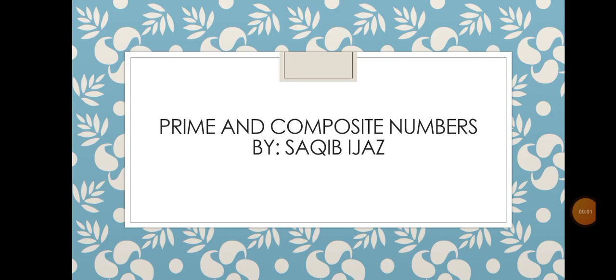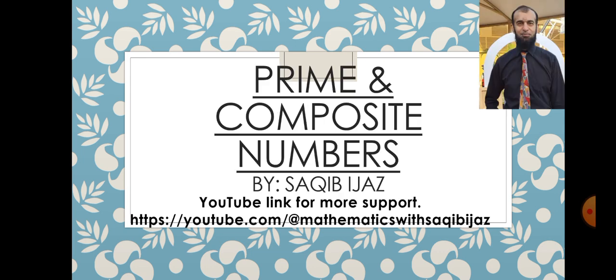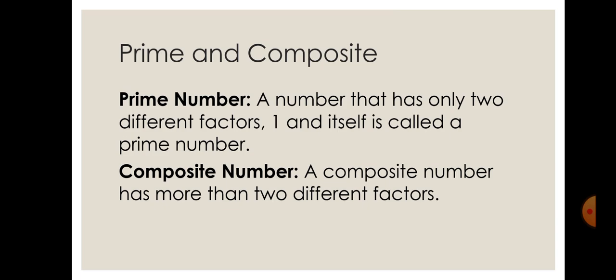Assalamu alaikum dear students. Our today's topic is prime and composite numbers. By definition, a prime number is a number that has only two factors — two different factors: one and itself. Whereas a composite number is a number which has more than two different factors. Let's understand these definitions by considering a few examples.